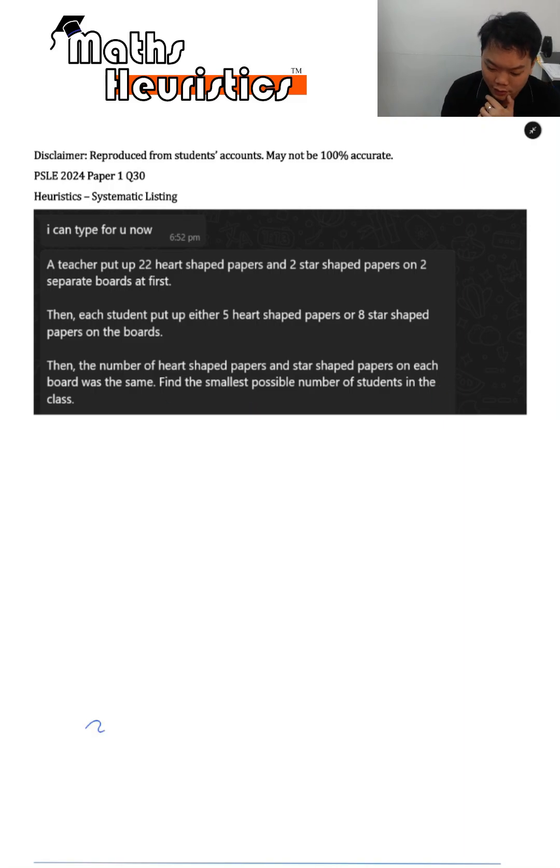So what they're doing here is you have 22 hearts and you have 2 stars at the beginning. So when you add on several 5 heart-shaped papers and several 8 star-shaped papers, eventually you will get an equal number. That's the main idea.